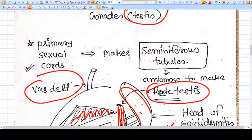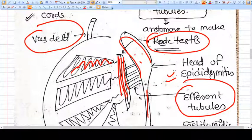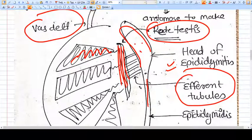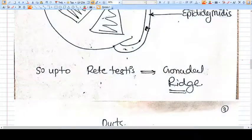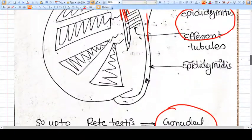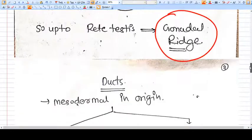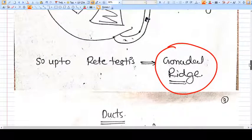This epididymis will further change into vas deferens, and this vas deferens goes intra-abdominally carrying the sperm. So primary sexual cords will differentiate and make seminiferous tubules. These seminiferous tubules will anastomose and go to rete testis. Up to rete testis, the part will be developed from gonadal ridge.